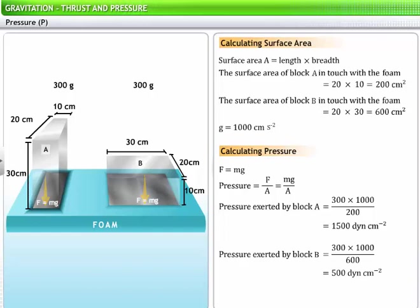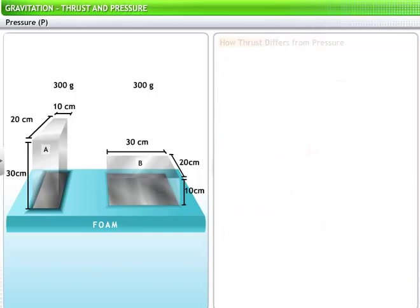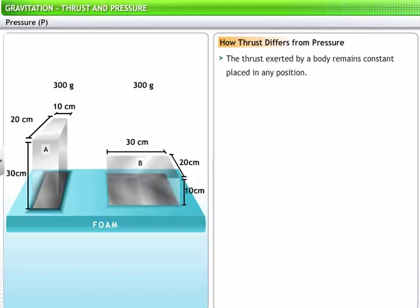Thus, in block A, the same thrust was acting on a smaller surface area. Hence the pressure exerted by block A was higher. This explains why the foam showed more compression where block A was placed. The thrust exerted by a body remains constant when placed in any position. However, the pressure exerted by the body changes with a change in positions.